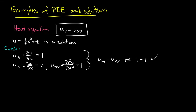This particular solution to the heat equation is called a heat polynomial. It's called a heat polynomial because it is a polynomial in x and t that is a solution to the heat equation. There are many heat polynomials, and I challenge you to find another one — they're not that hard to find.